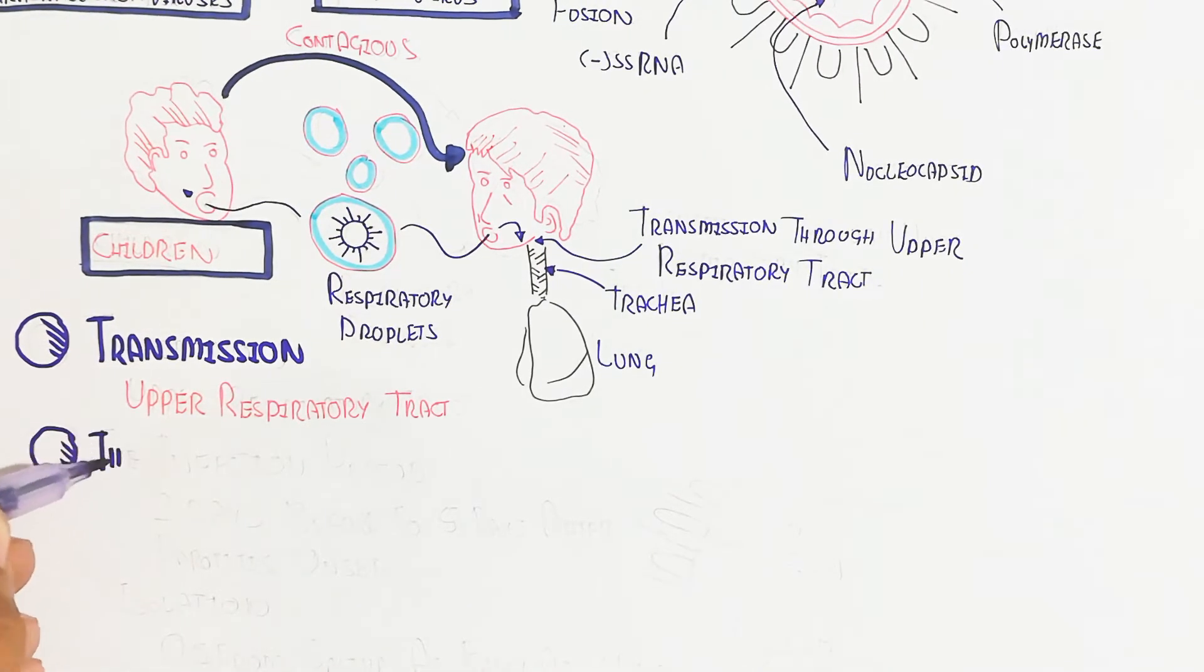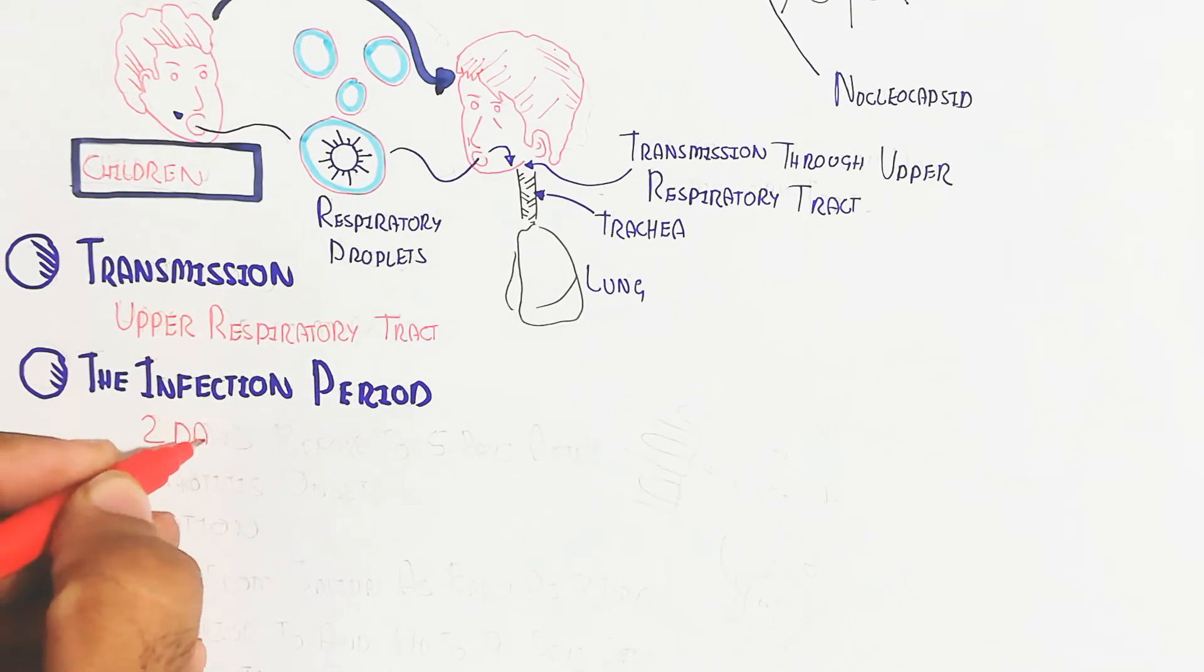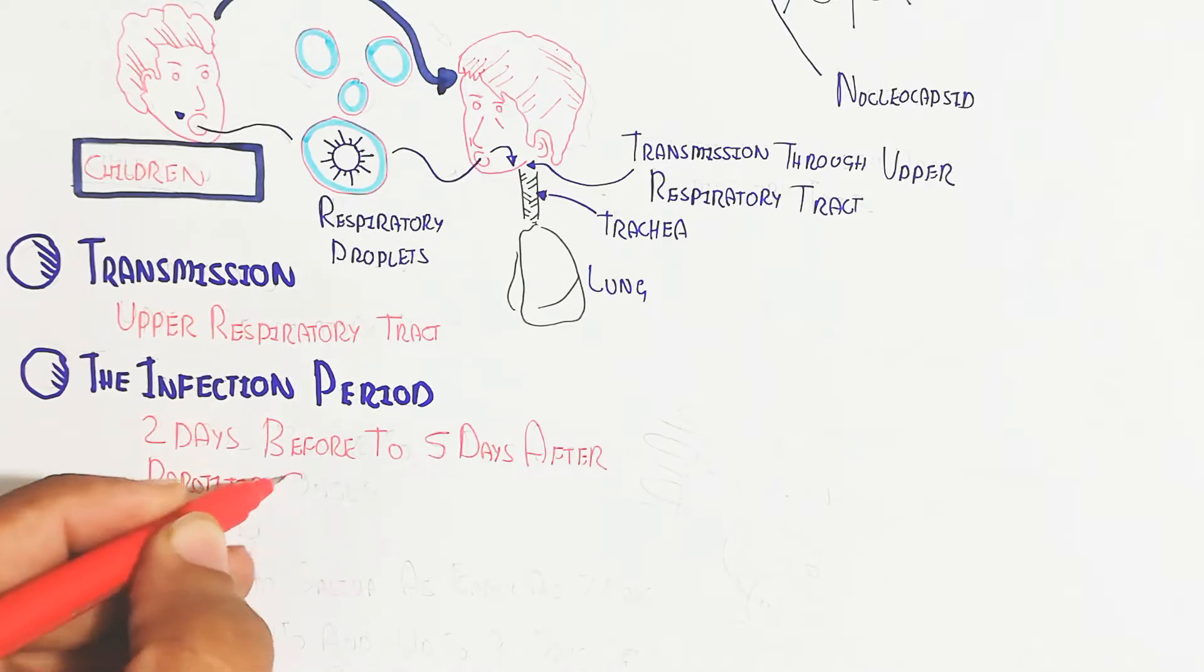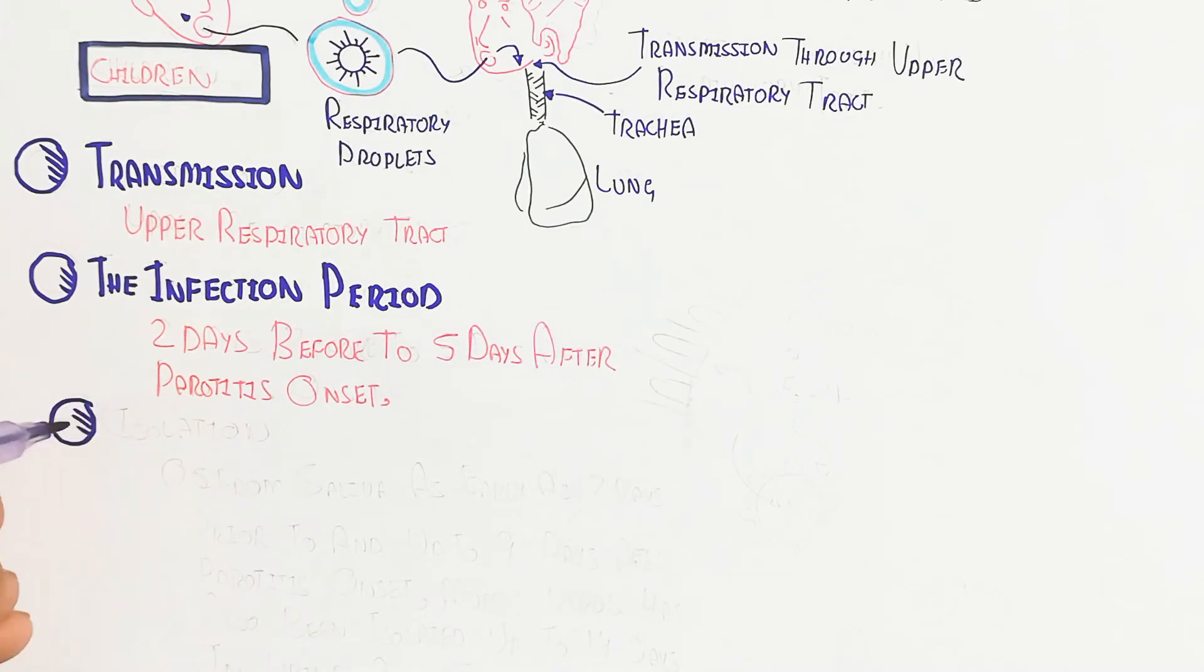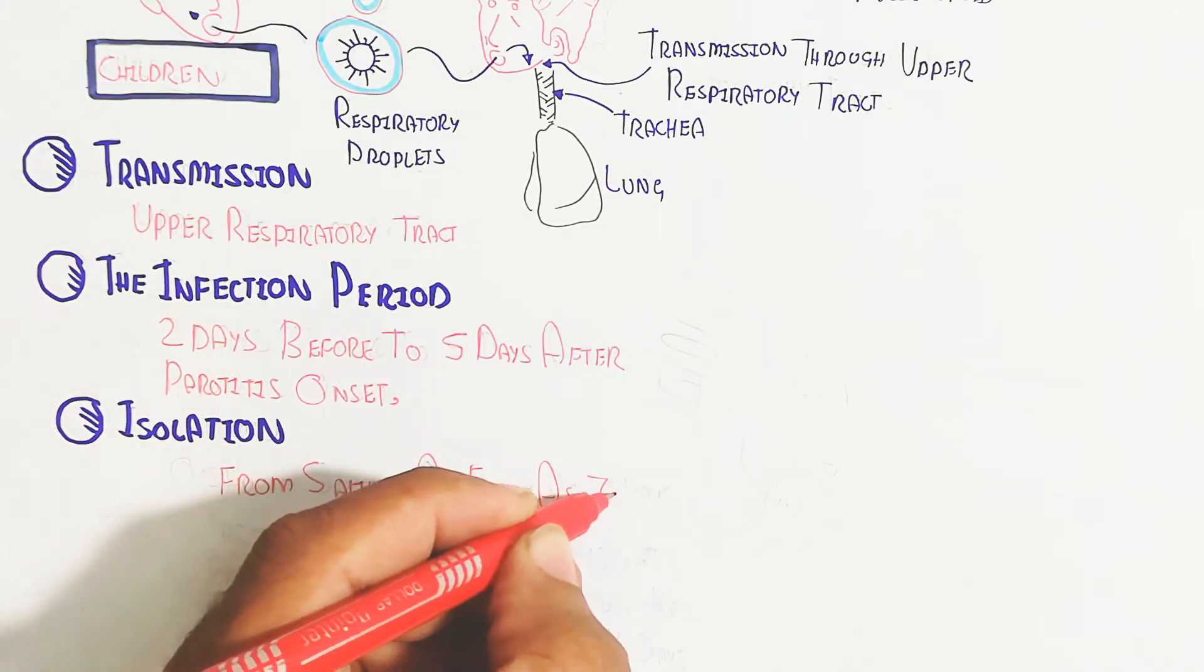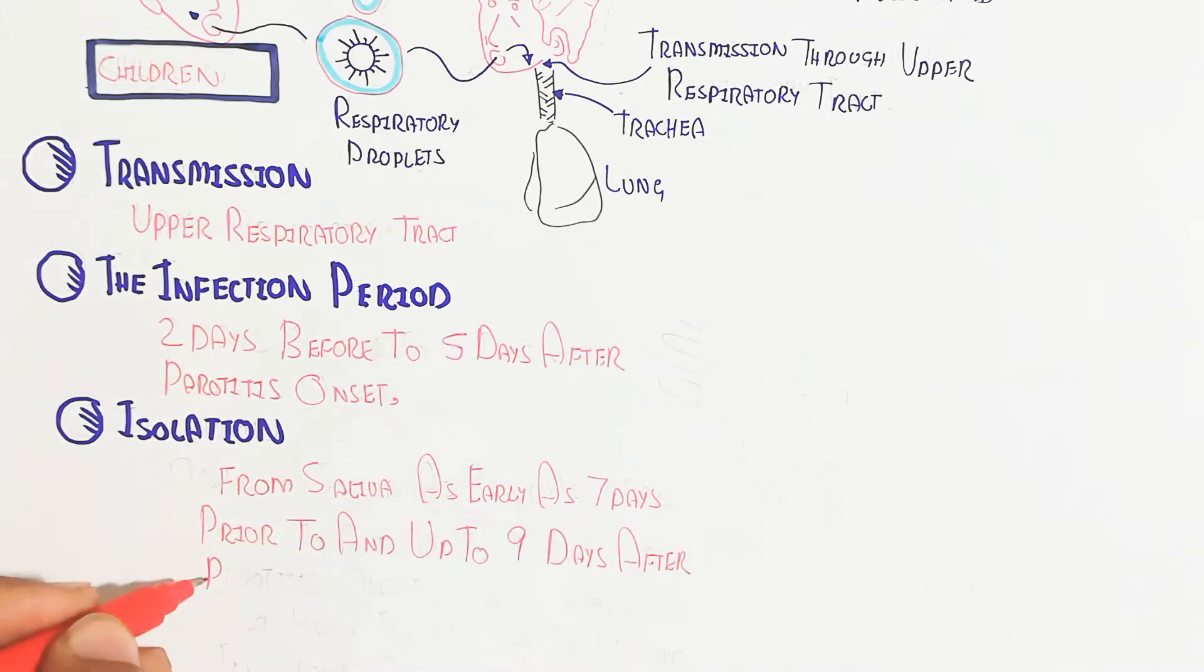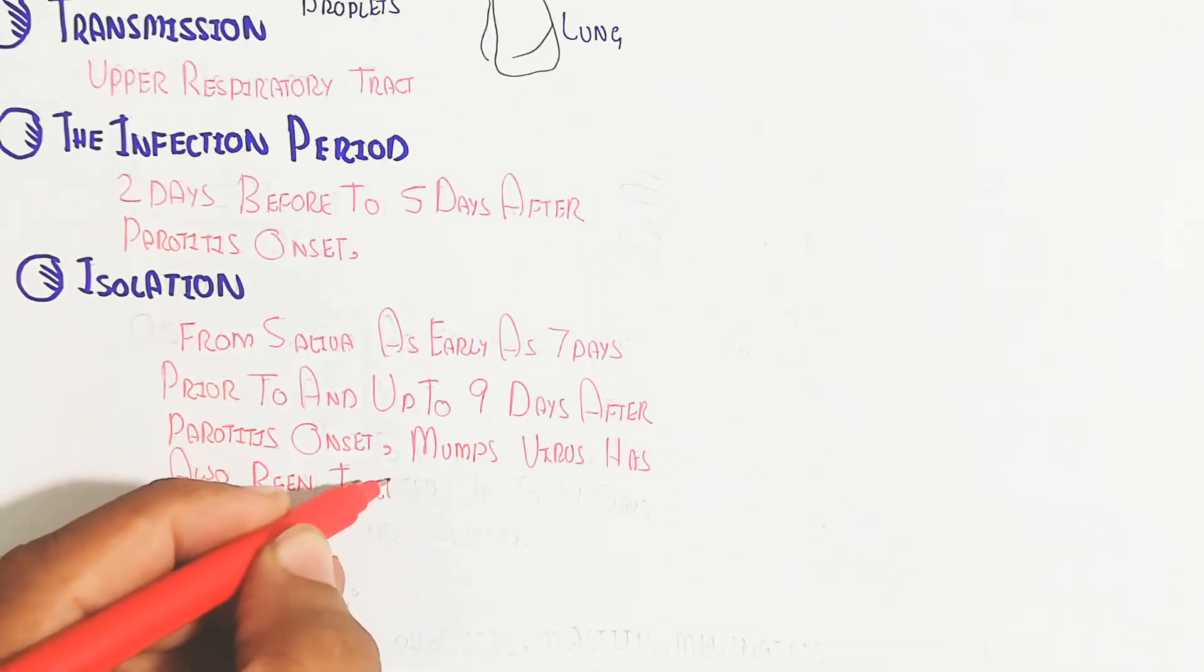The transmission is through the upper respiratory tract. The infection period is two days before to five days after parotitis onset. Parotitis means the parotid gland will be swollen. Isolation from saliva as early as seven days prior to up to nine days after parotitis onset. Mumps virus has also been isolated up to 14 days in urine and semen.